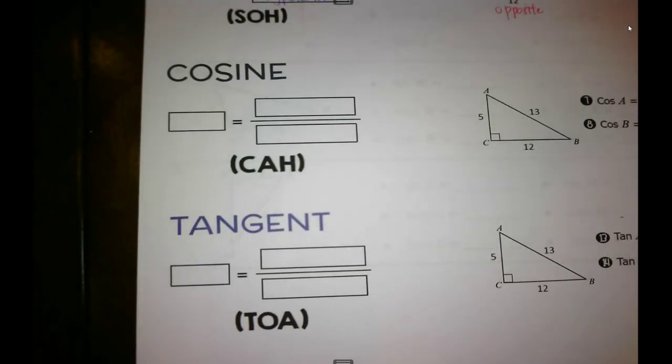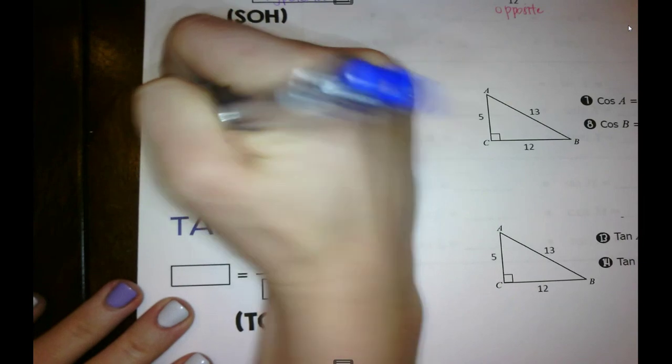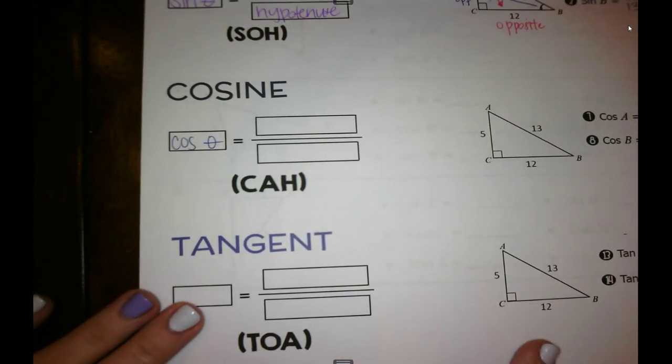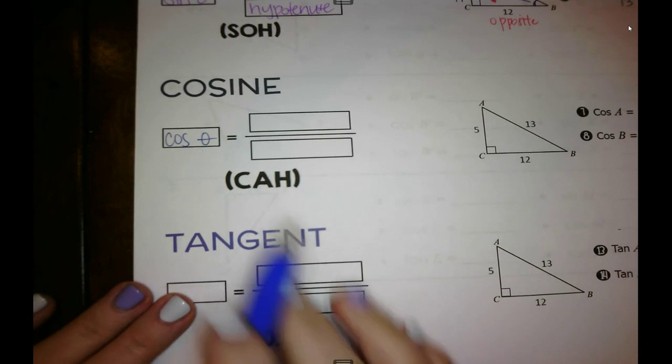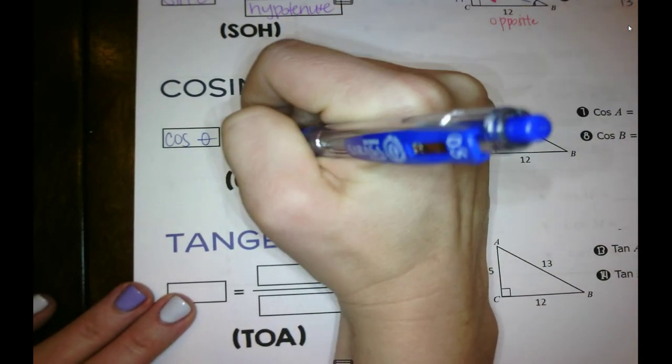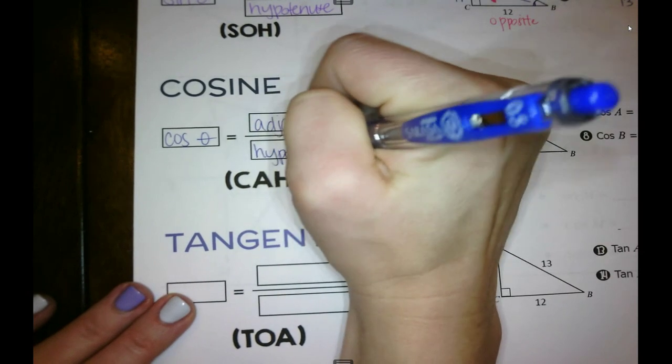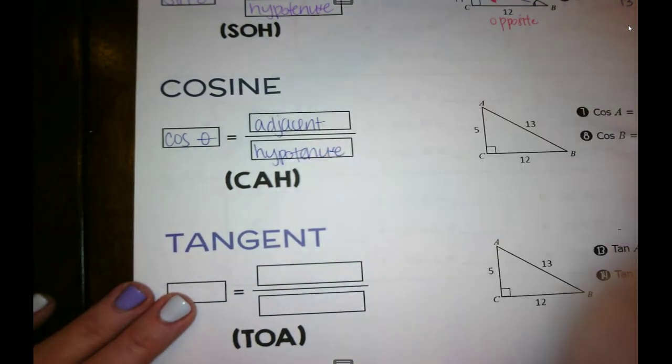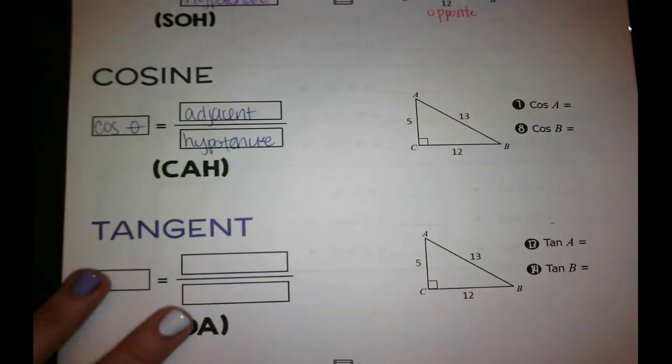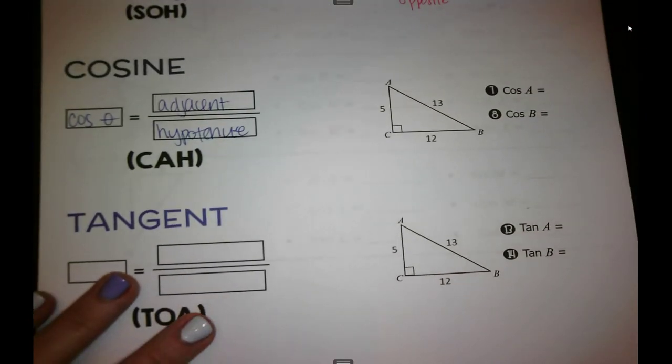All right, let's look at cosine. We abbreviate that with COS. We still say cosine. So cosine theta of an angle is going to be our adjacent over hypotenuse. That's our hypotenuse.